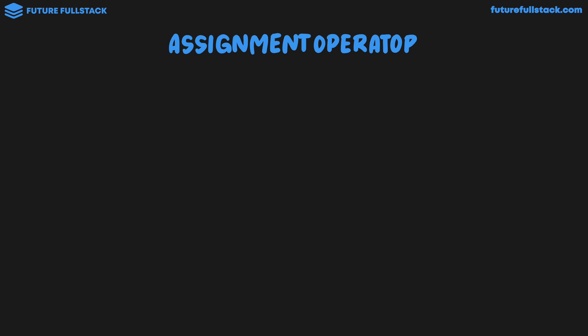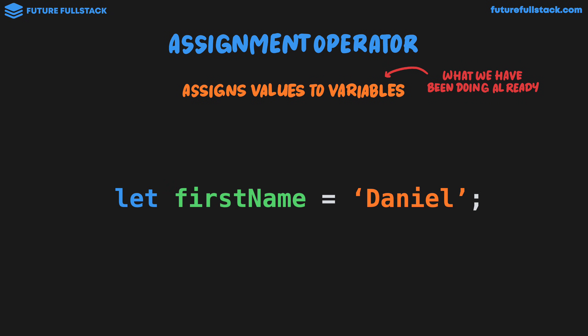So what is the assignment operator? The assignment operator assigns values to variables and it's what we have already been doing throughout the videos. We declare a variable like this: let firstName equal the string 'Daniel', and in order to assign the string Daniel to this variable we have to use the assignment operator which is just an equal sign.